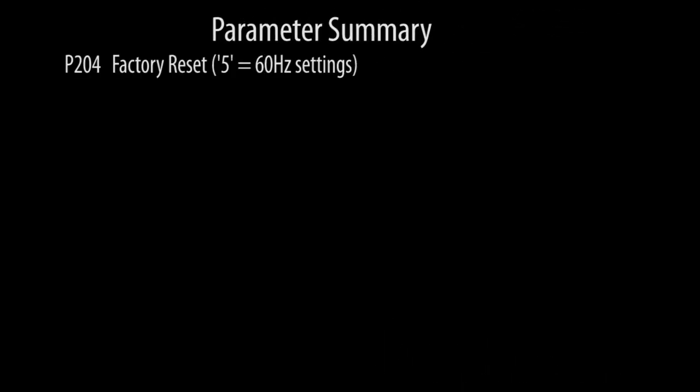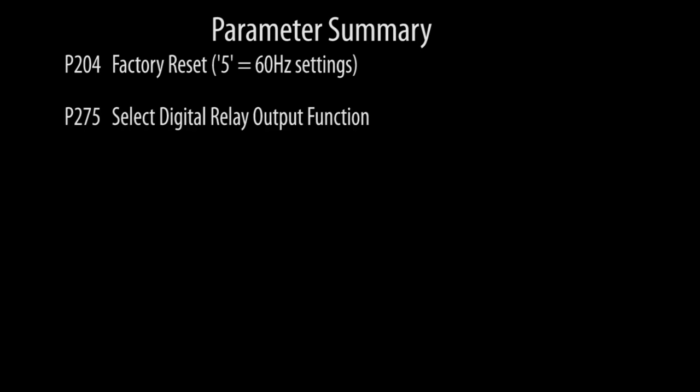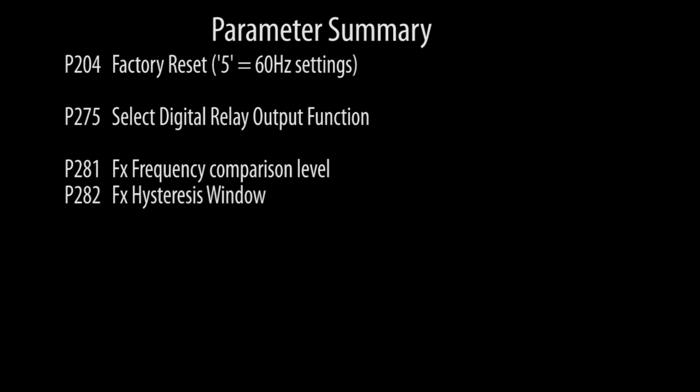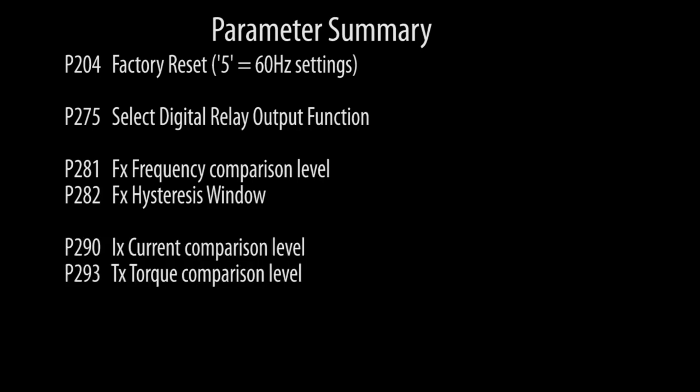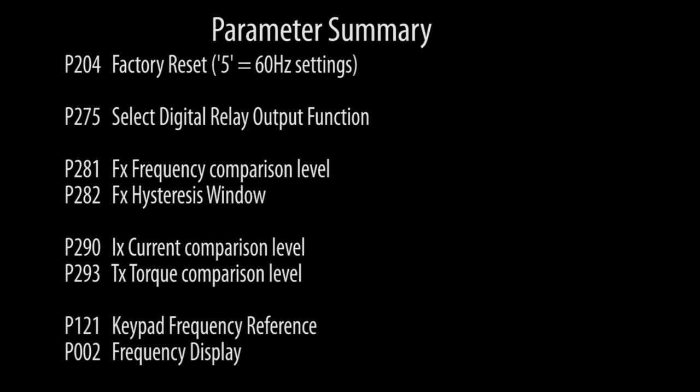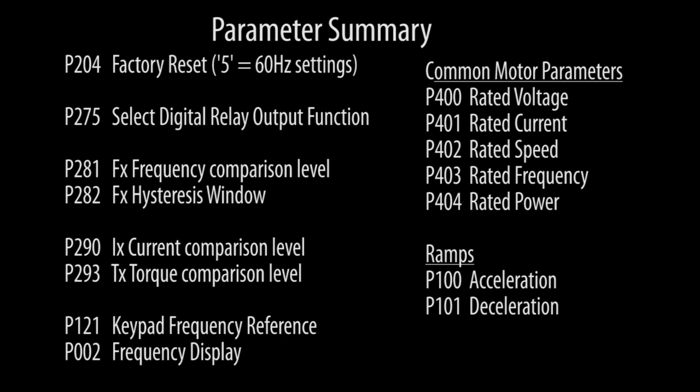So after the factory reset, all we really did was tell the digital output what we wanted it to do. For some of the functions we needed to provide a frequency level to compare against, and we found that we could even use hysteresis if we wanted to. There are similar comparison levels for the current and torque monitoring functions. While the default motor parameters worked for this demo, you should be sure to enter your motor parameters to get the best possible drive performance.